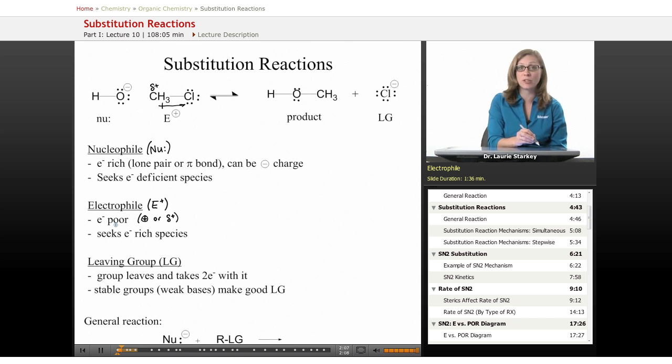An electrophile is something that seeks an electron rich species. I should mention, where does the name electrophile come from? It's called an electrophile because it is electron loving. That makes sense—if it is electron deficient, it's going to be seeking electrons, loving electrons.